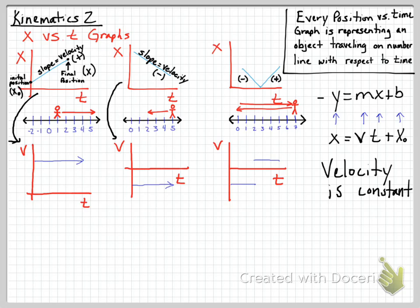For the second graph, the position versus time graph had a negative slope, so velocity was negative. The velocity versus time graph is therefore a constant negative line. The last graph is a special situation: the object is moving toward the origin in the negative direction — basically returning to their original position — so it has a constant negative velocity.